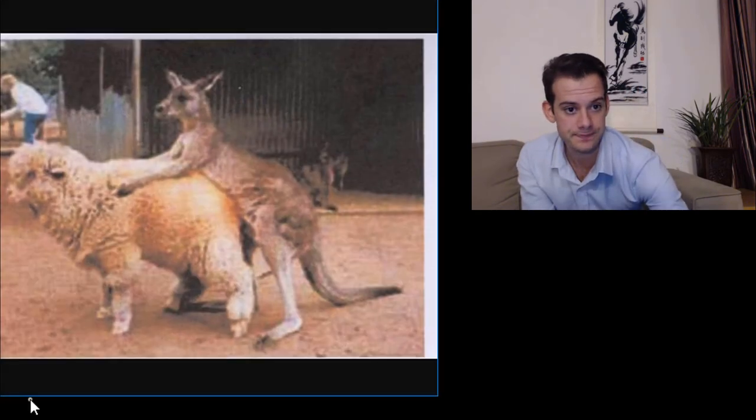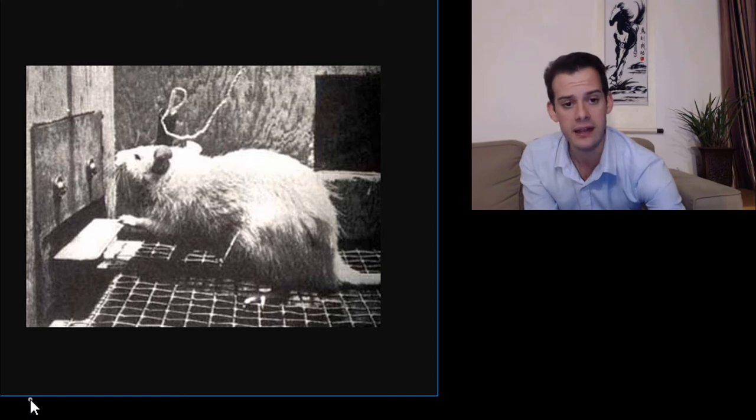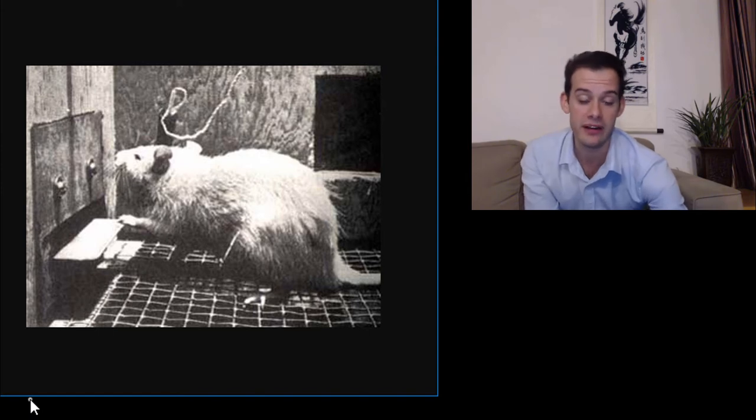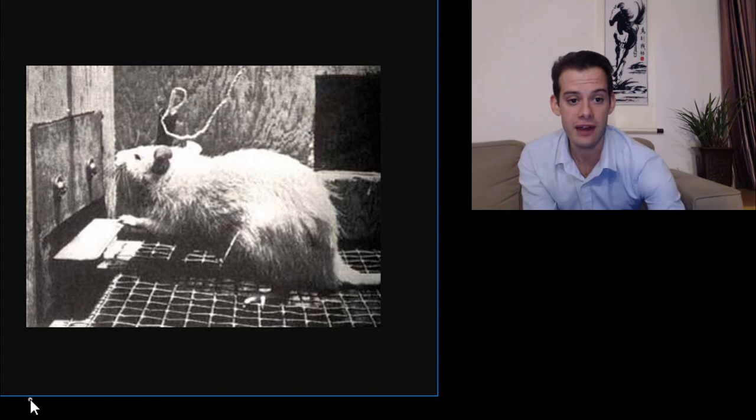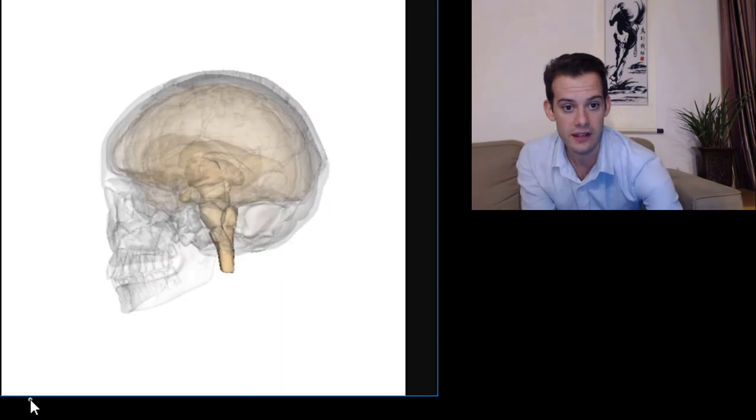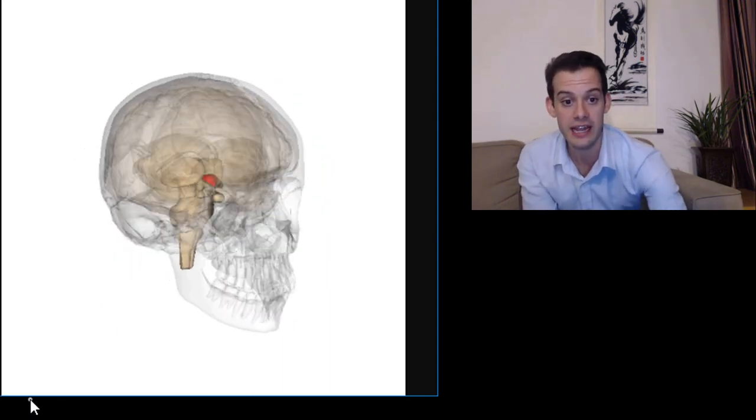Here we can see one of Olds and Milner's rats. You can see this wire here is going to the electrode that's been implanted into the rat's brain, and so when the rat presses this lever here he receives some stimulation of that brain region. If this were connected to the nucleus accumbens then the rat would be likely to press this lever a great deal. And here we can see the location of the hypothalamus where you'll find the nucleus accumbens in the human brain.